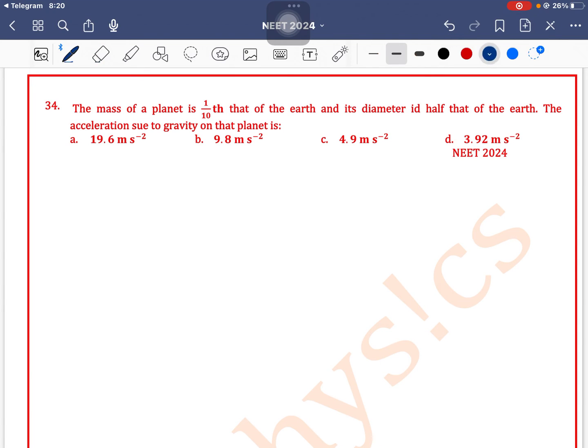The mass of a planet is 1/10th of the mass of Earth and its diameter is half of that of Earth. So the diameter of the planet is half of Earth's.